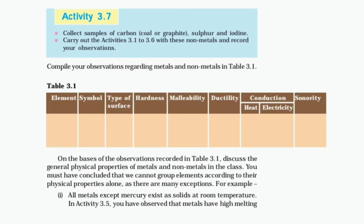Activity 3.7: Collect samples of carbon (coal or graphite), sulfur, and iodine. Carry out activities 3.1 to 3.4 and 3.6 with these non-metals and record your observations. Compile your observations regarding metals and non-metals in Table 3.1, categorizing them by element, symbol, type of surface, hardness, malleability, ductility, conduction of electricity, and sonority. Discuss the general physical properties of metals and non-metals in the class. You must have concluded that we cannot group elements according to their physical properties alone, as there are many exceptions.